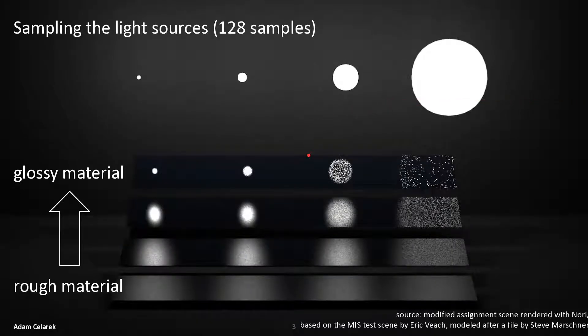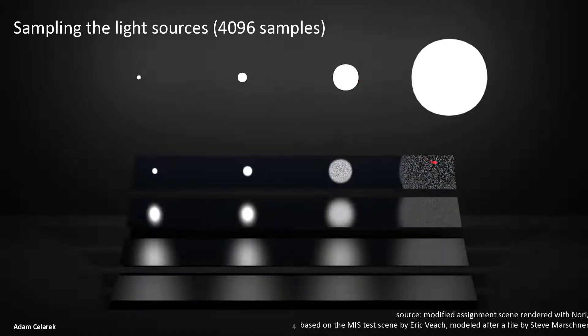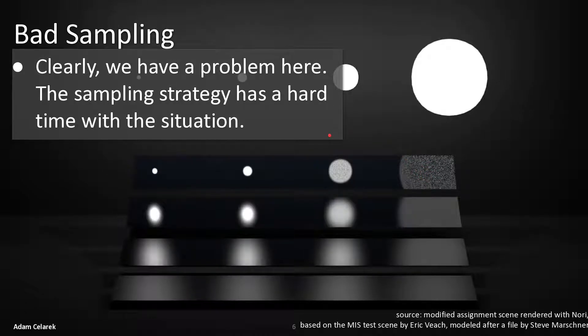Here we see an example of bad sampling over here. On the bottom you see a rough material and on the top a glossy material which is harder to sample. It's generally harder to sample using this light source sampling strategy. This is the same strategy that we saw in the light lecture. And you can see that it's bad even when we increase the number of samples. Even further increasing it to 16,000 it's still noisy. So clearly this sampling strategy has a very hard time to deal with this situation.